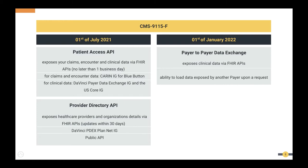For clinical data, there's another implementation guide called Da Vinci's Payer Data Exchange and the US Core Implementation Guide. Through the Patient Access API, you are asked to expose the patient information, organization details, and more. Through the Provider Directory API, you are asked to expose healthcare providers and organization details via a set of FHIR APIs. You have to keep this data up to date within 30 days.